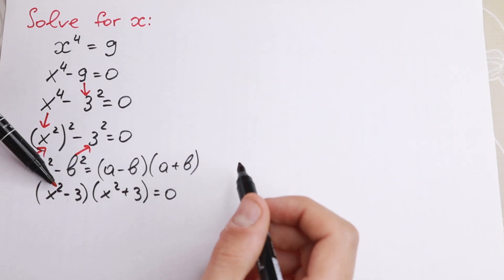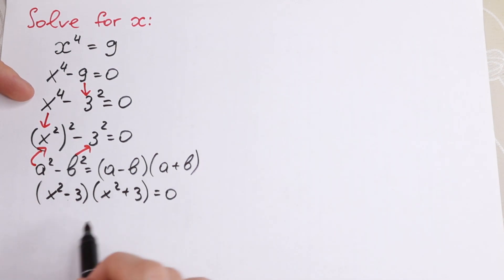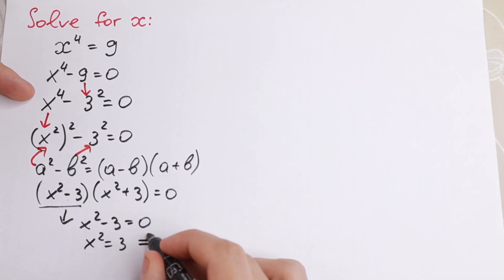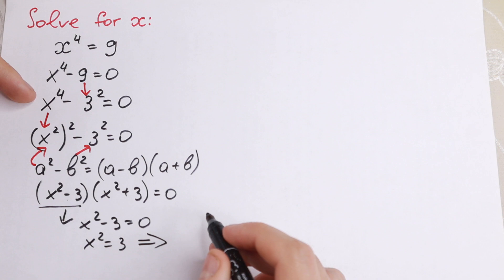Really good case because we have a product equal to 0. Then this one equal to 0. We will have x squared minus 3 equal to 0, x squared equal to 3. And if we take square root from both sides we will have... I write it right here.